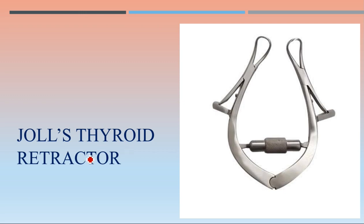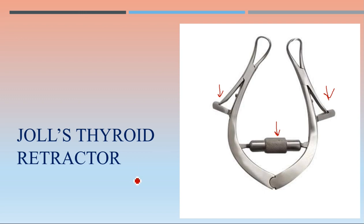Then Joll's thyroid retractor — as the name suggests, used to retract tissues during thyroid surgery. The lock can be released from both sides, and with the help of a knob you can adjust the distance between the retracted parts. This is Joll's thyroid retractor.